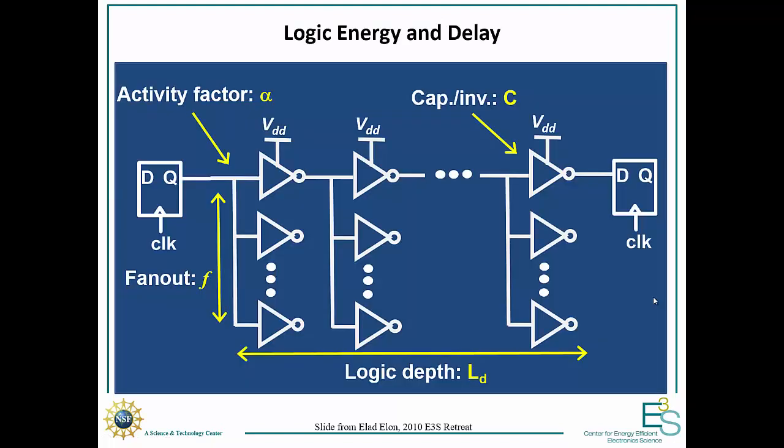But that's not the only thing required. Now we want to understand what is the power required, or how do we keep the leakage energy low as well. So keep minimizing the CV squared minimizes our dynamic energy. But now we also have to minimize our leakage power. So that tells us what's the on-off ratio that we want.